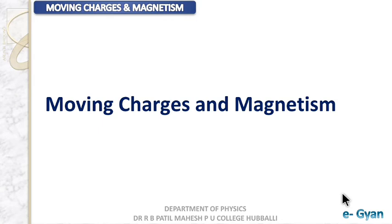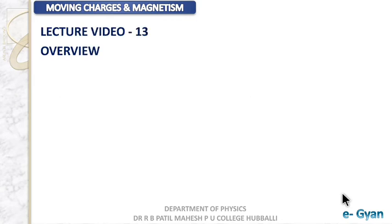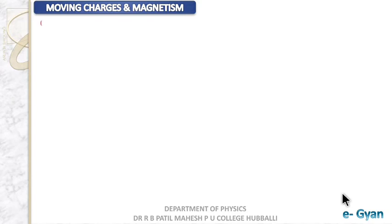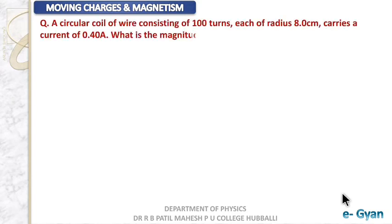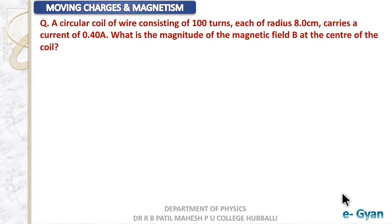Hello dear students, welcome to video lecture 13 of the chapter Moving Charges and Magnetism. Today we shall solve some of the numericals of this chapter. Our first question: a circular coil of wire consisting of 100 turns, each of radius 8 centimeter, carries a current of 0.4 ampere. What is the magnitude of magnetic field B at the center of the coil?